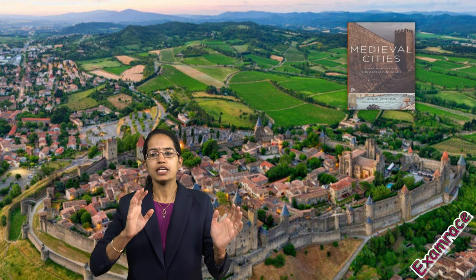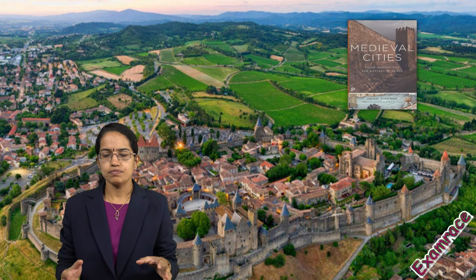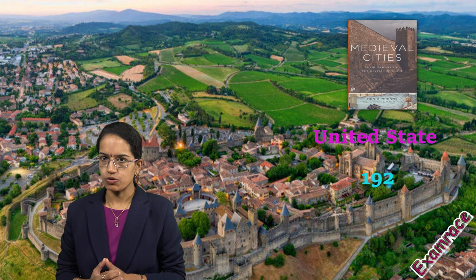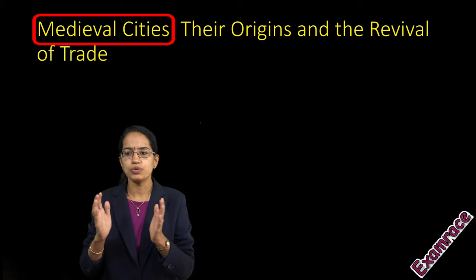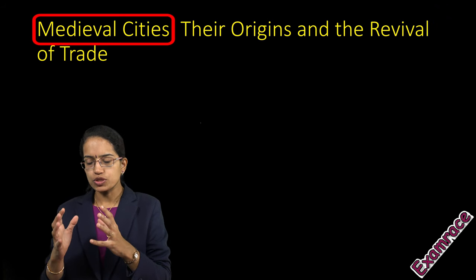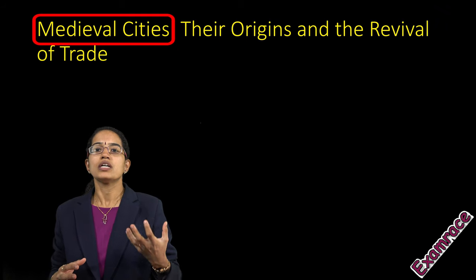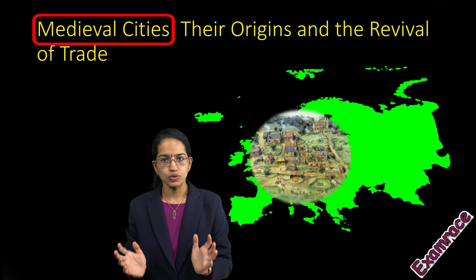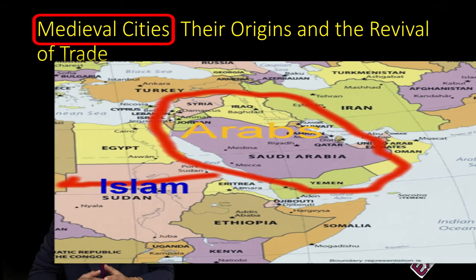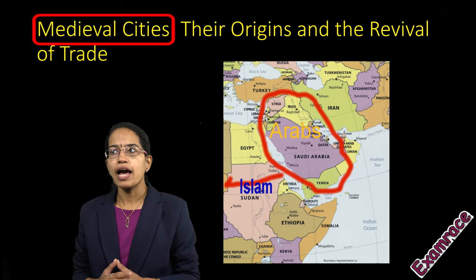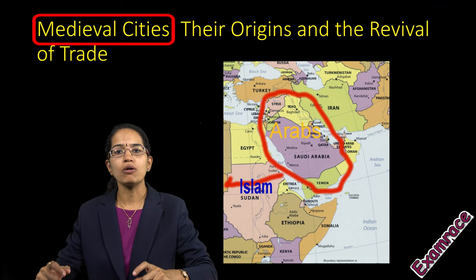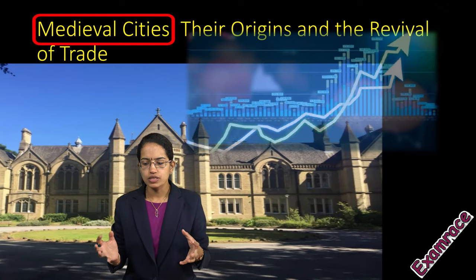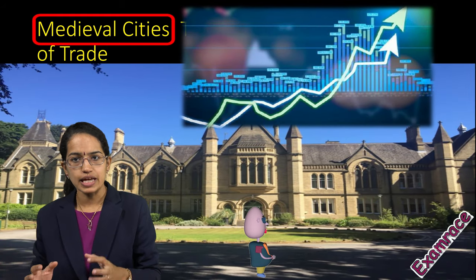One of his works, 'Medieval Cities: Their Origin and Revival of Trade,' which came in 1927, was based on lectures he delivered in the United States in 1922. He believed that during the 10th to 12th century there was a very important period. Initially, Europe was flourishing with numerous towns and cities. However, during the 7th century, with the Arab conflicts that came in, urbanization ceased, economies ruralized, and the concept of the closed estate economy started.